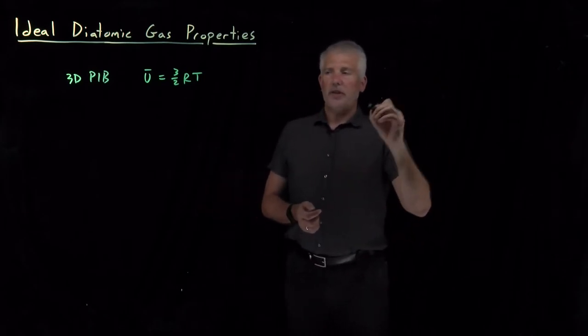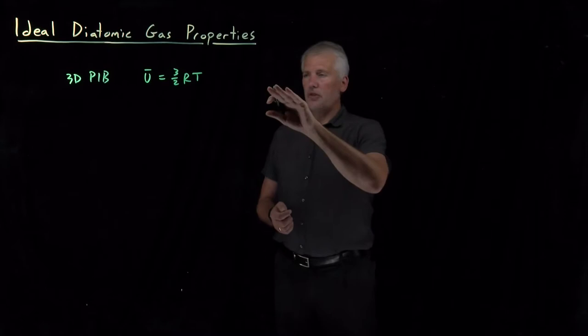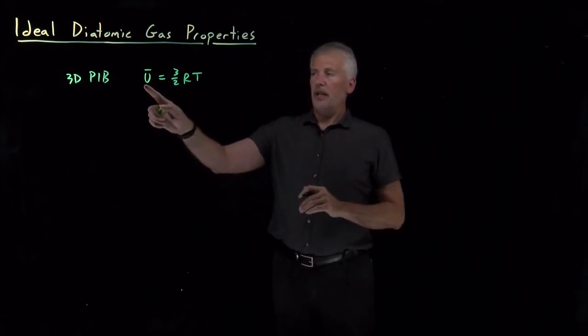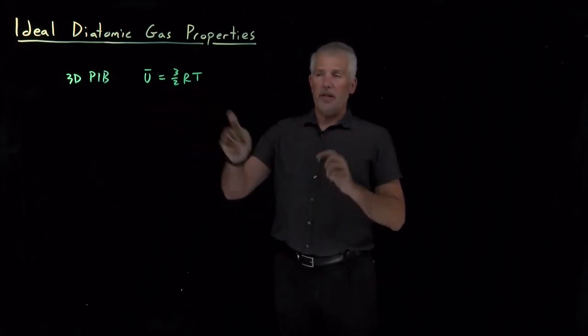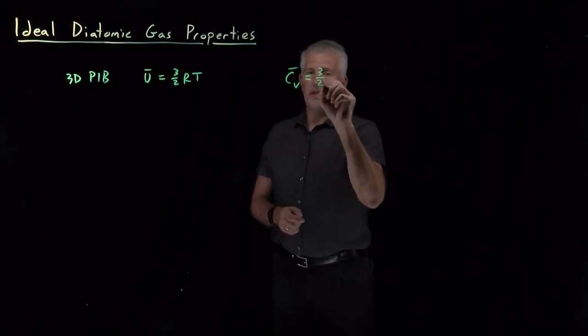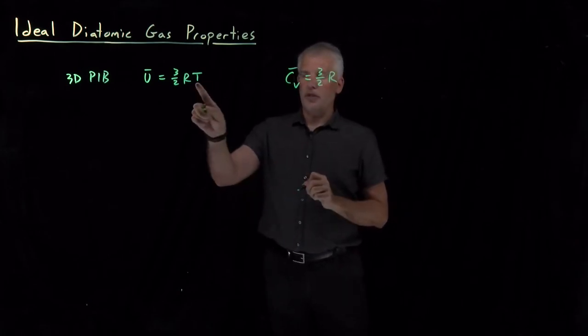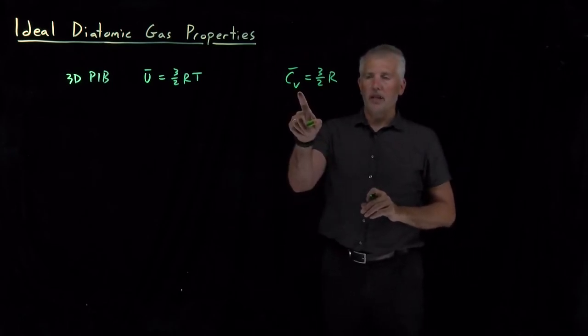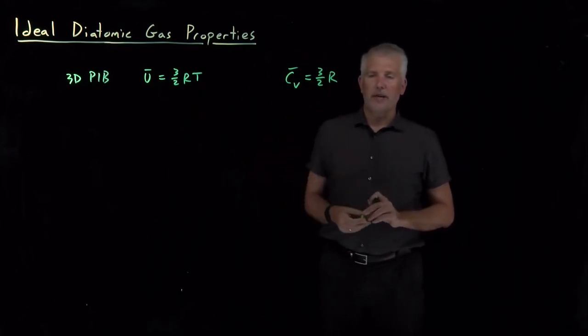The pressure of that ideal gas, actually first let's do the heat capacity. If we take the temperature derivative of the energy, the constant volume heat capacity, temperature derivative of three halves RT is just three halves R. So the constant volume heat capacity of a 3D particle in a box is three halves R.